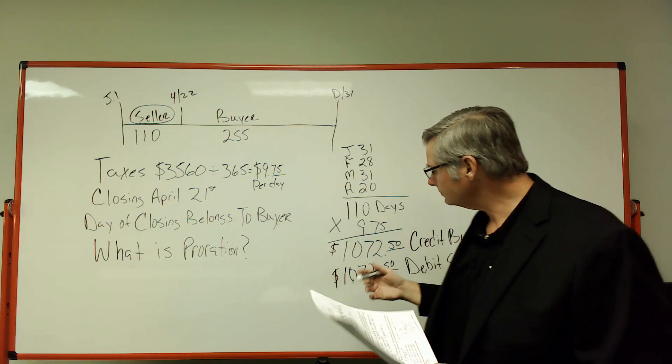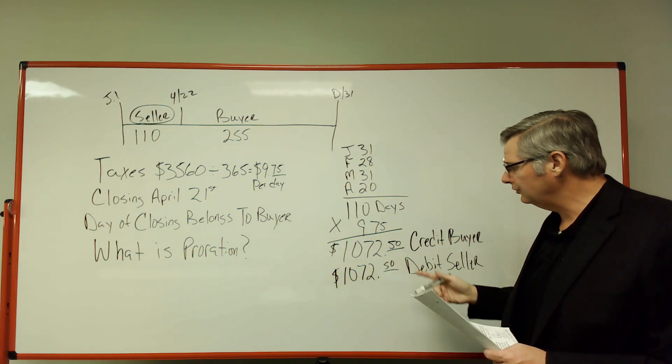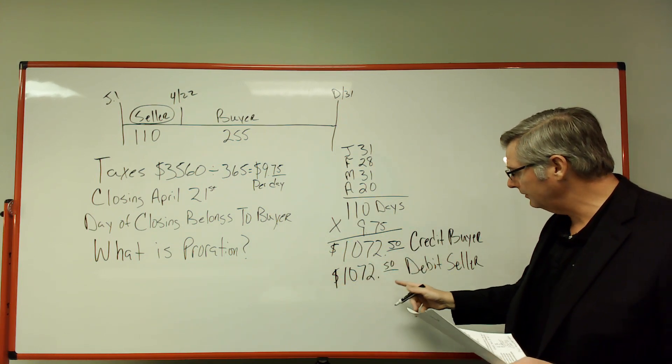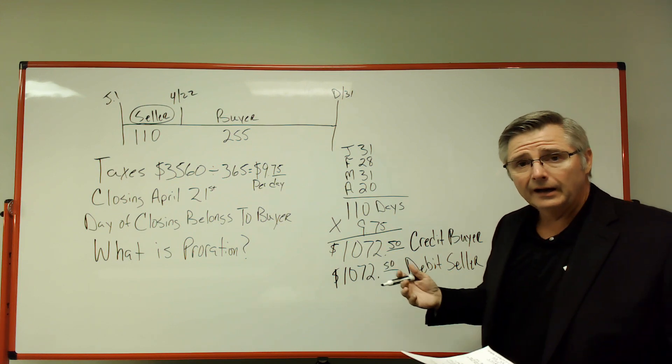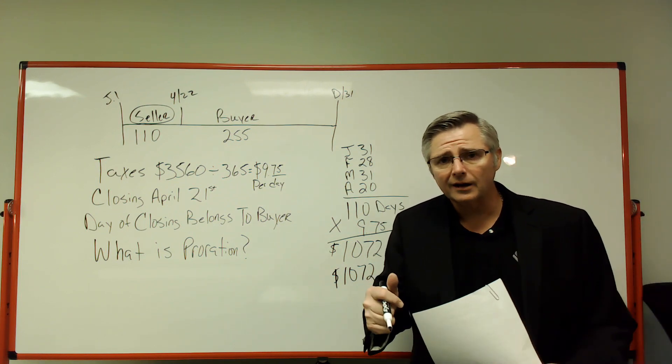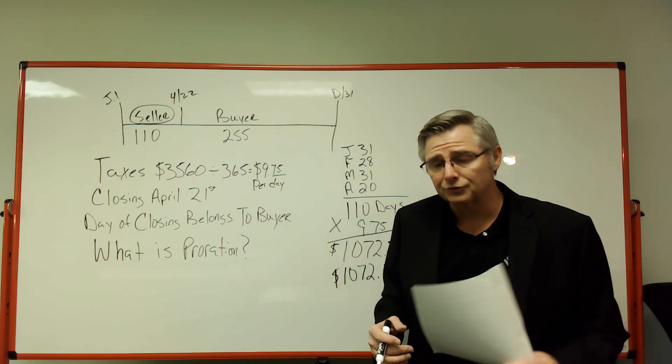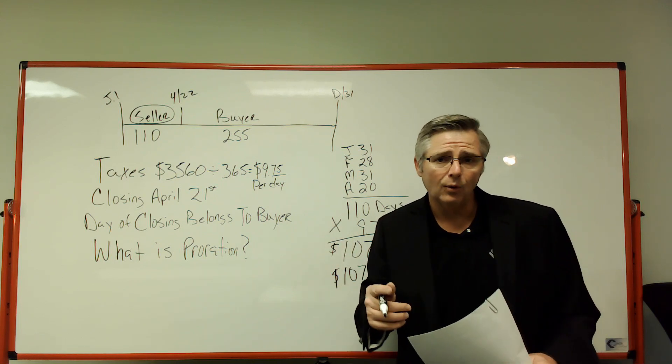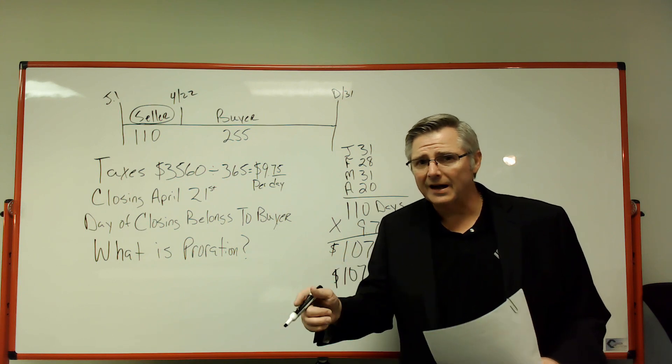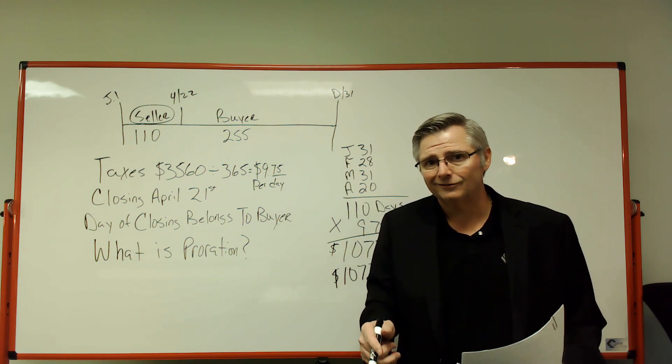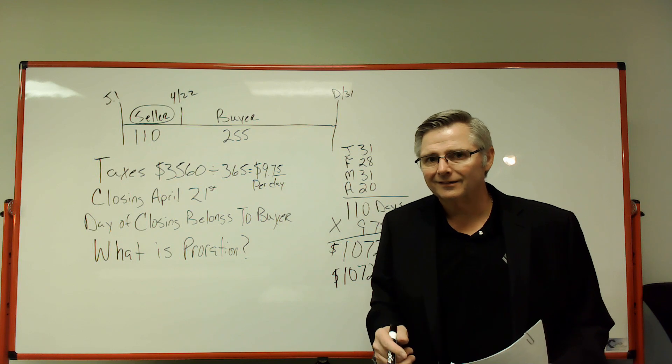So there we go, $1,072.50 credit to buyer, $1,072.50 debit to seller. And there it is, folks. So good luck, give it all you got, and just remember there's a good chance you'll see a proration like this on your state exam. Thanks and keep watching, and make sure you hit the like and subscribe button to our channel. Thank you again and we'll see you soon.